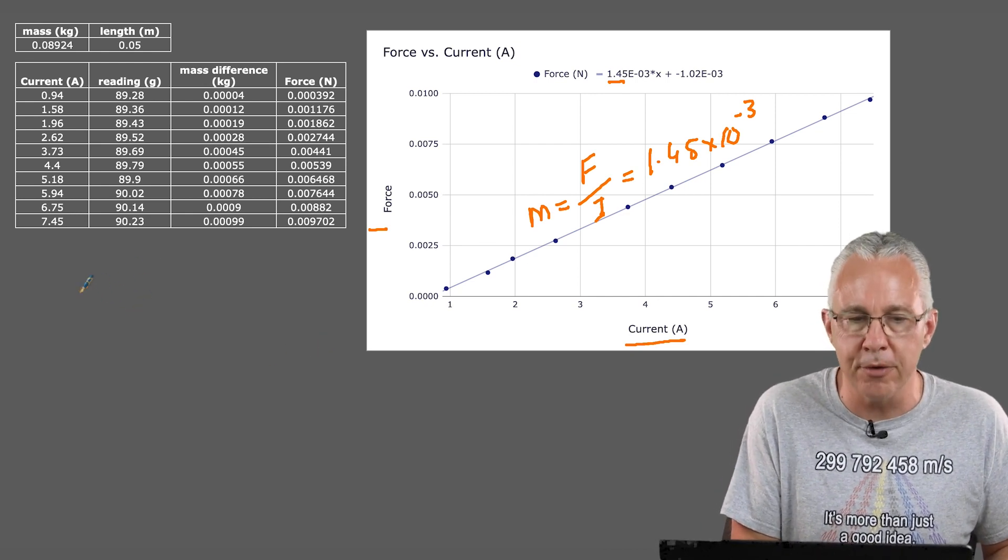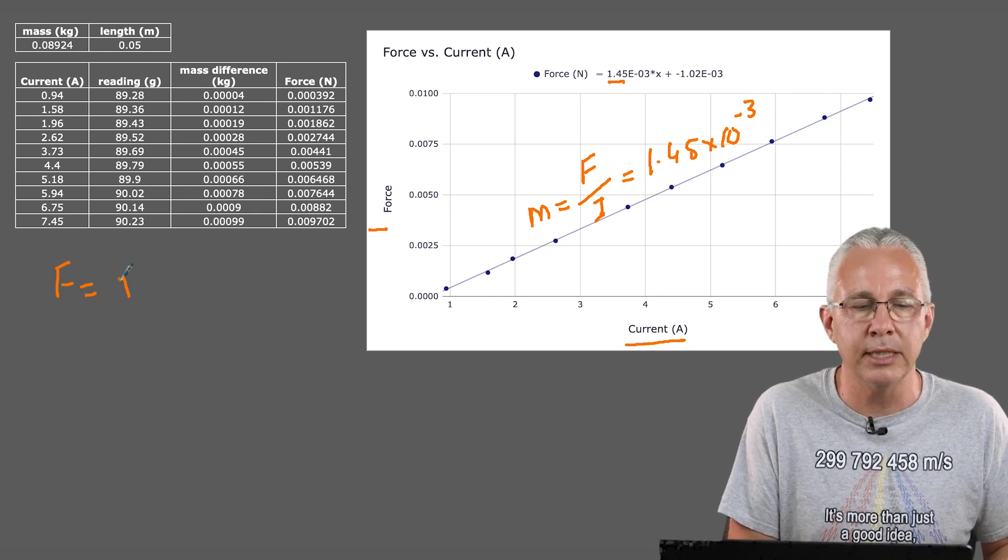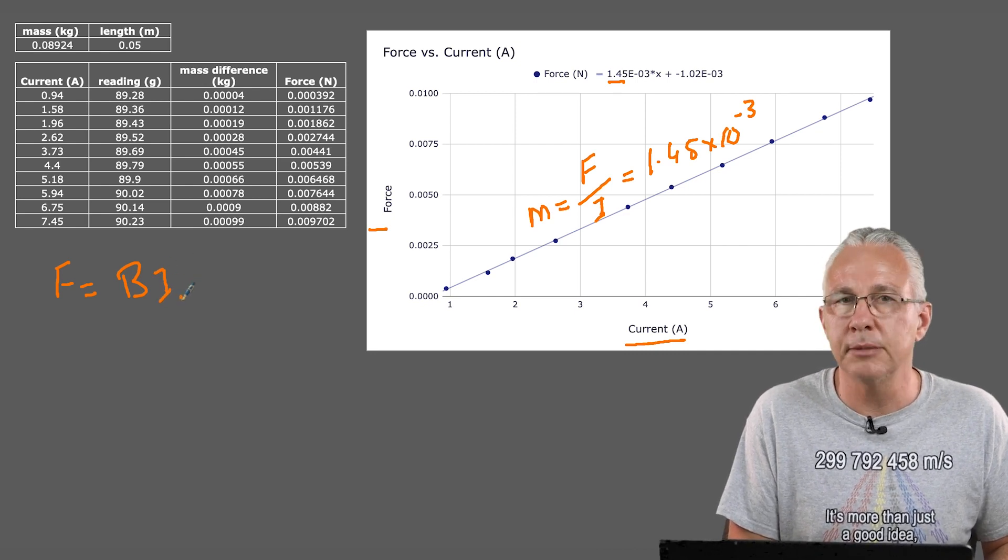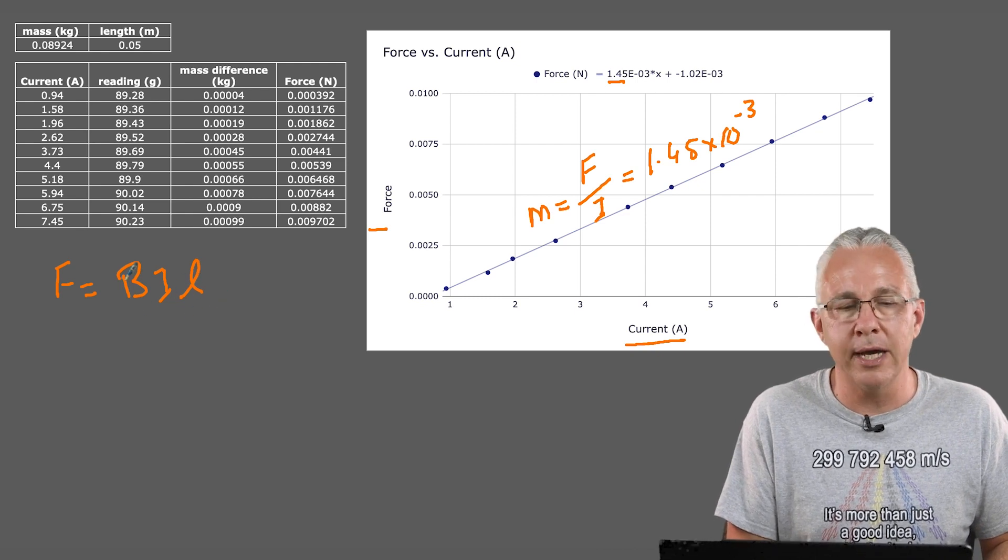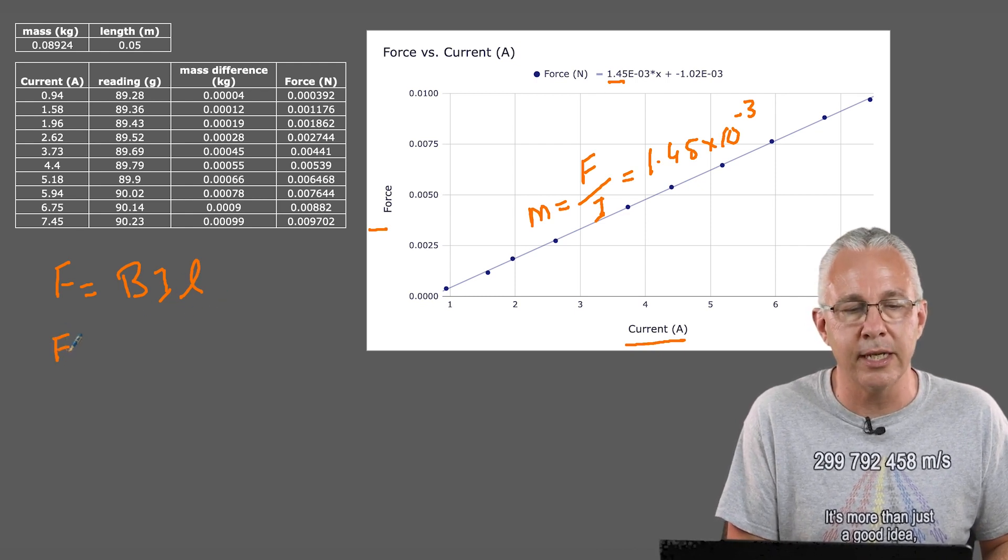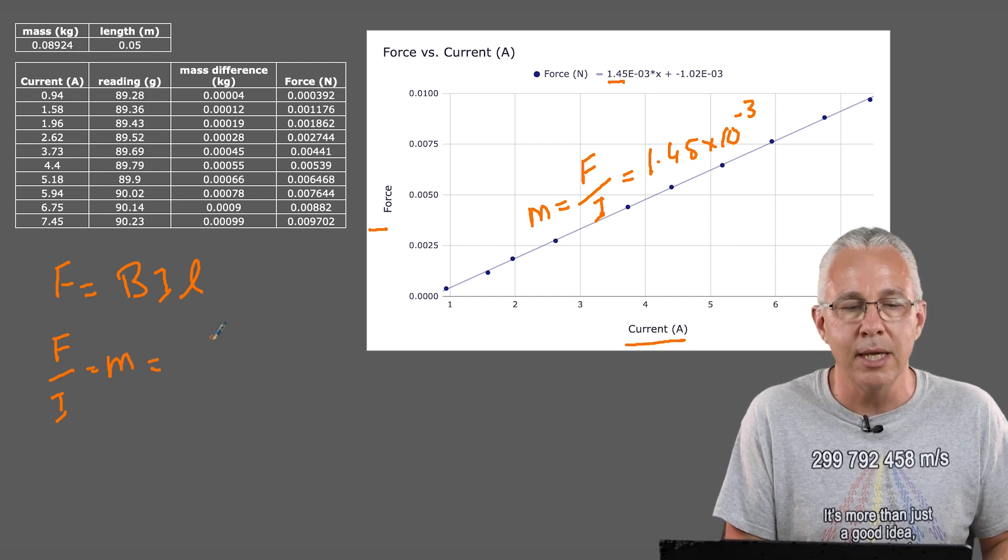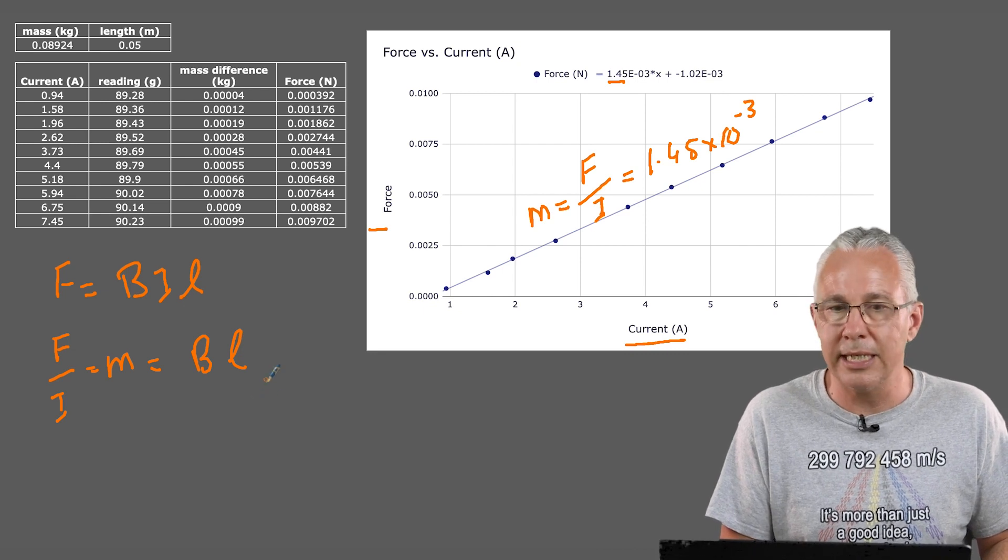But what does that actually mean? Well, let's draw back our understanding of the motor effect. Our motor effect says that the force of a current-bearing wire in a magnetic field is equal to the magnetic field strength multiplied by the current multiplied by the length that is in that magnetic field. Now if I rearrange this so that I get F over I on one side, what do we have? We have our slope, and that is equal to B times L.